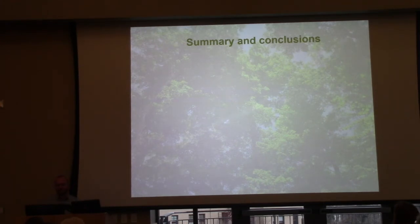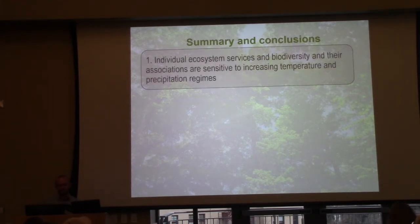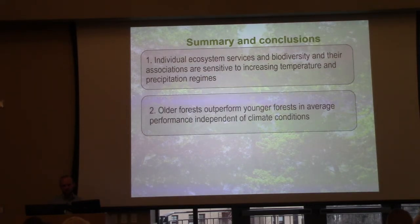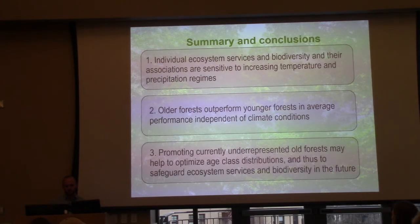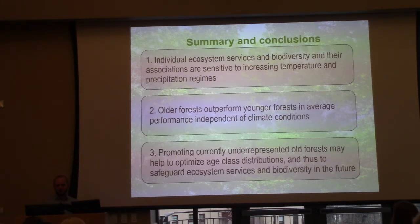Summary and conclusion: Individual ecosystem services and biodiversity and their associations are sensitive to increasing temperature and precipitation regimes. Older forests outperform younger forests in average performance, independent of the climatic conditions. Promoting currently underrepresented old forests may help to optimize age class distributions and thus safeguard ecosystem services and biodiversity in the future.